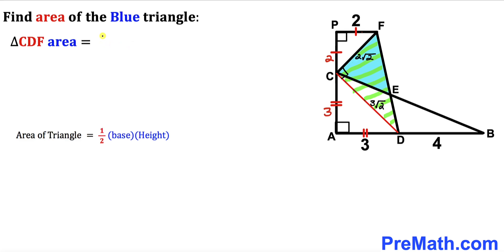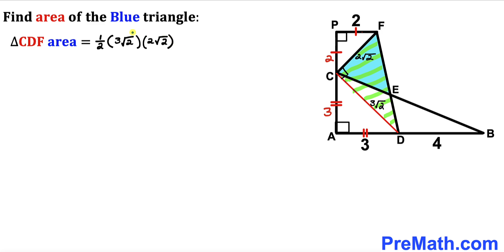Let's fill in the formula: one half times 3√2 times 2√2. Square root of 2 times square root of 2 gives us 2. Multiplying and simplifying the right-hand side gives us 6 square units. So the area of right triangle CDF turns out to be 6 square units.